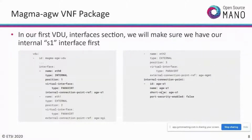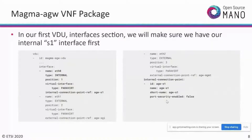Coming to internal connection points declared in the descriptor: access-gateway-S1 is the actual declaration of the internal connection point. When we declared the interfaces, the internal connection point was referenced there, which maps the interface to the connection point. OSM also has capabilities to instruct certain things on created ports — for example, disabling port security for a particular interface — using the port-security-enabled boolean key.